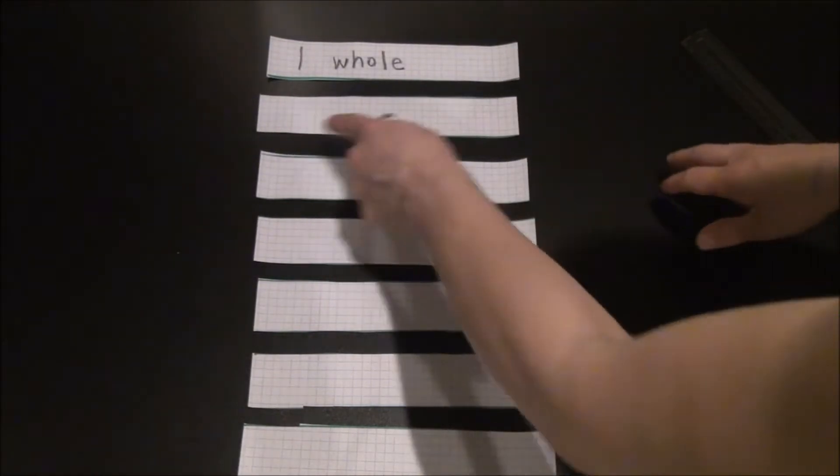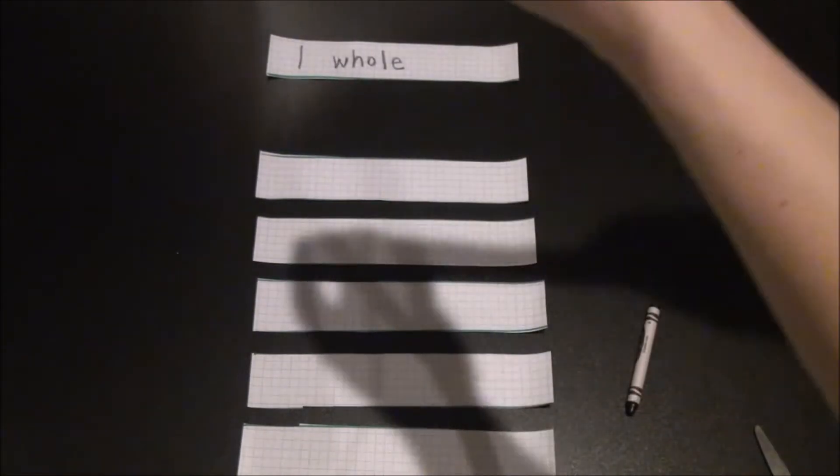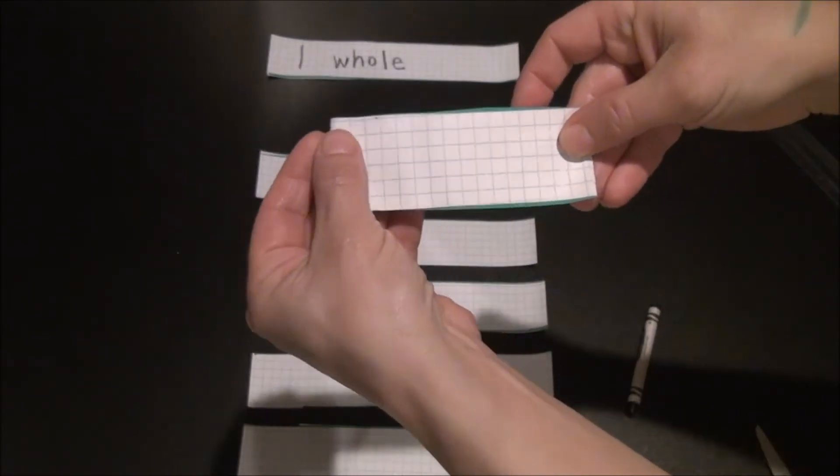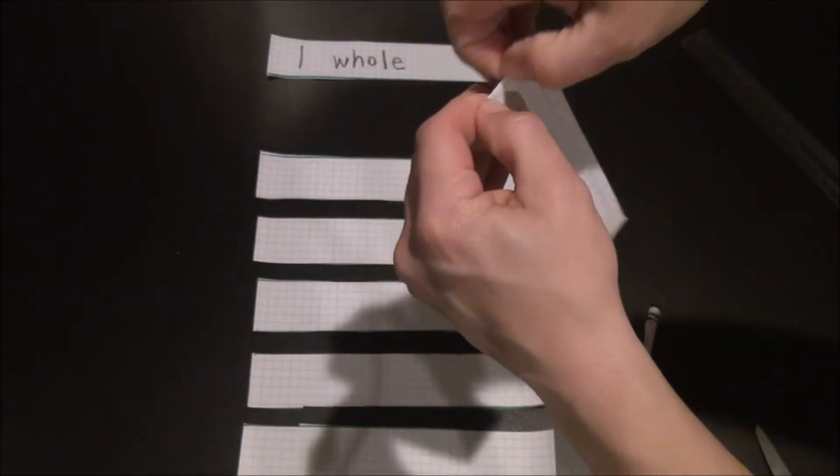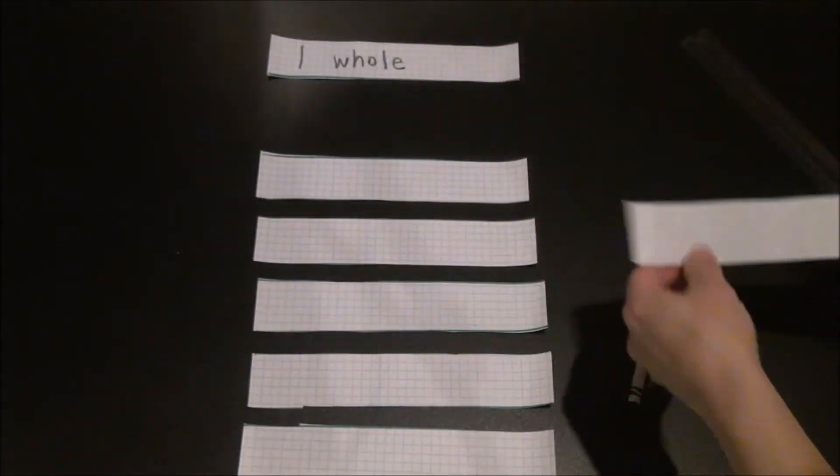This next strip right here will represent halves. Let's take that whole strip and fold it into two equal parts, creating halves. Check to make sure both parts are equal in size. Once you have a nice crisp fold, open it up, trace your fold, and label the parts.